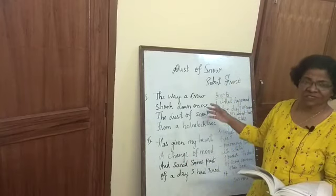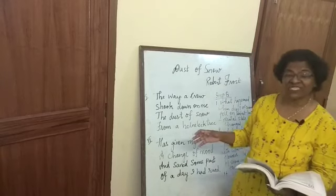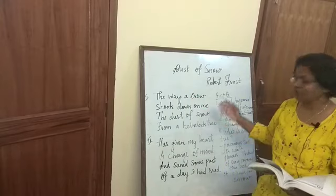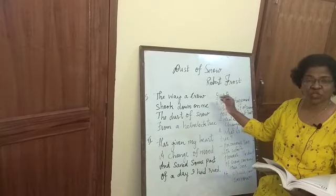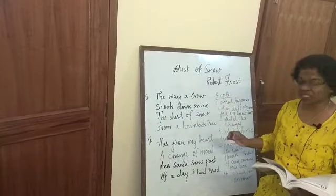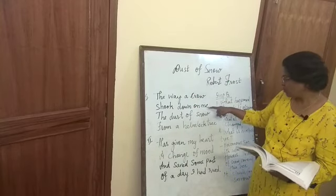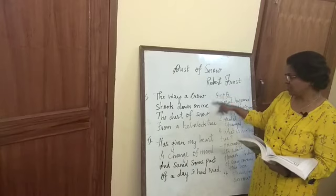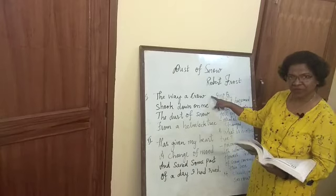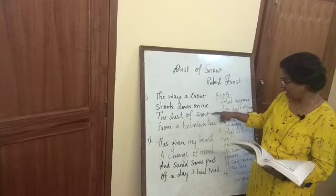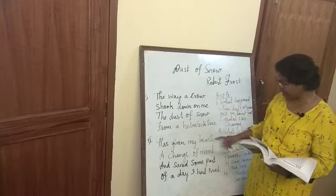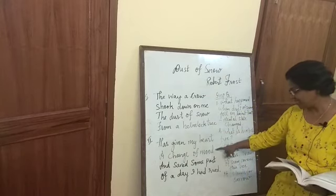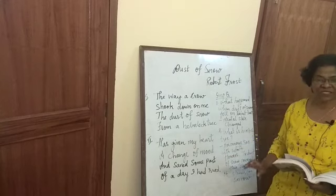In these stanzas, there are some rhyme schemes. Rhyme schemes are rhyming words where the last letters should be the same. Here, crow, me, snow, tree — crow and snow are rhyming words, giving the scheme A, B, A, B. In the second stanza: heart, mood, part, rood — giving the scheme C, D, C, D. This is the rhyme scheme.